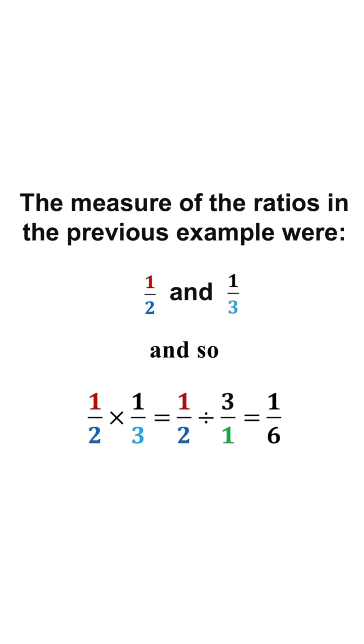For example, if we want to multiply the green-black ratio by the red-blue ratio, we would have a product of one-half multiplied by one-third, which equals one-sixth.